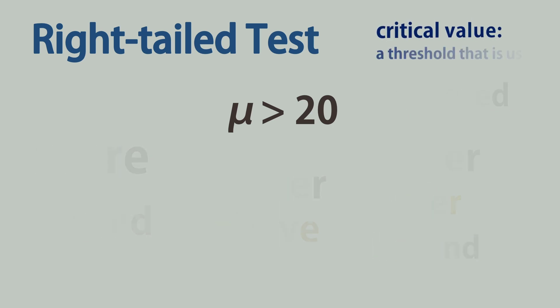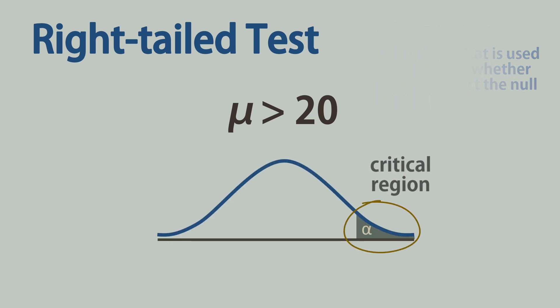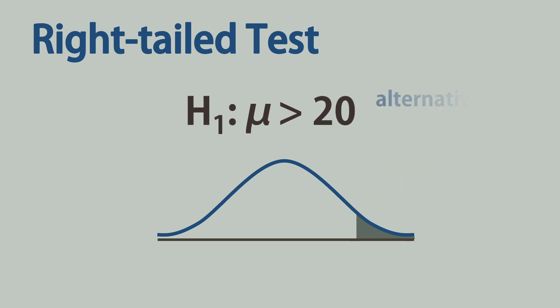The critical value for a right-tailed test will always be positive and the critical or rejection region under the curve will be to the extreme right, hence right-tailed. Note that the direction of the test is indicated in the alternative hypothesis and not in the null hypothesis.